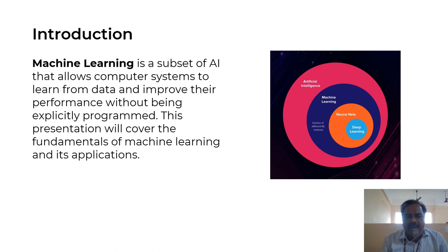Machine learning is a subject that allows a computer system to learn from data and improve performance without being explicitly programmed. Machine learning is nothing but the subset of artificial intelligence. AI performs four main operations: act as a human, think as a human, act rationally, and think rationally.